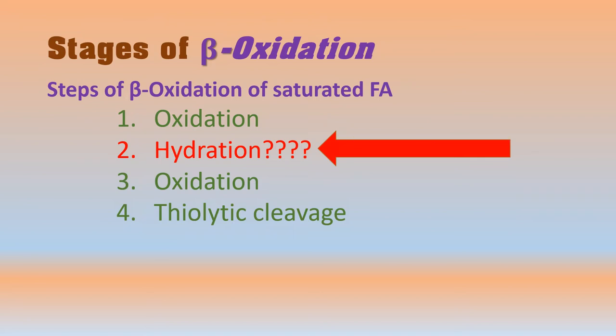The sequence of steps during beta oxidation of saturated fatty acids is: first, oxidation; then hydration; then oxidation again; and the last step is thiolytic cleavage. These steps occur when there is a saturated fatty acid.